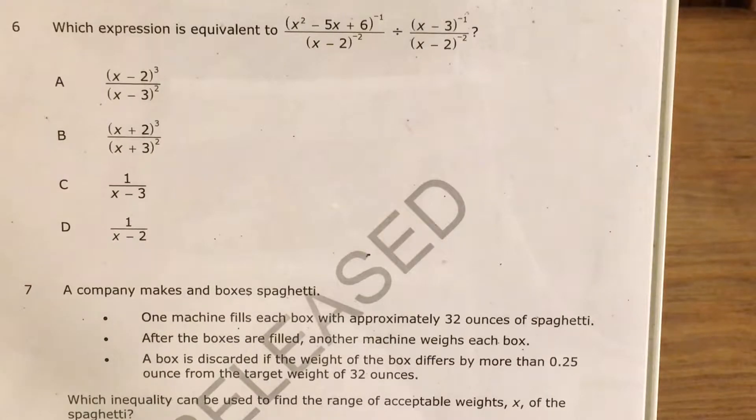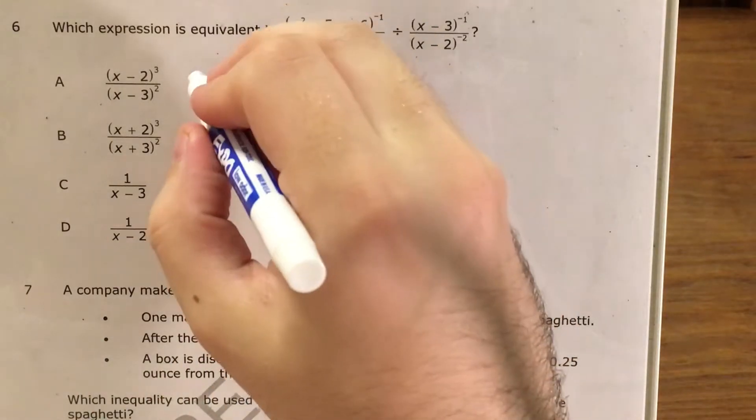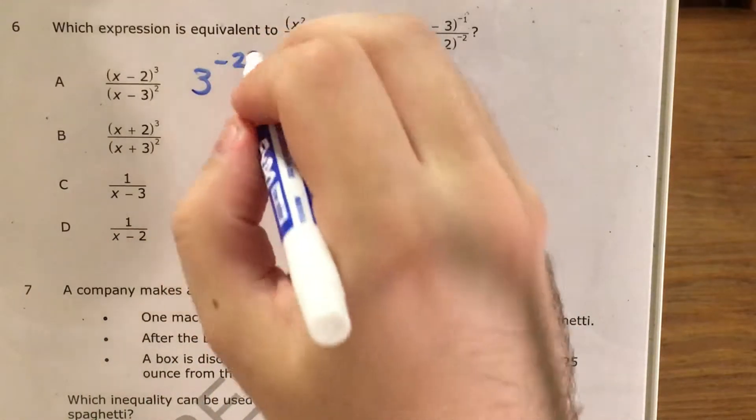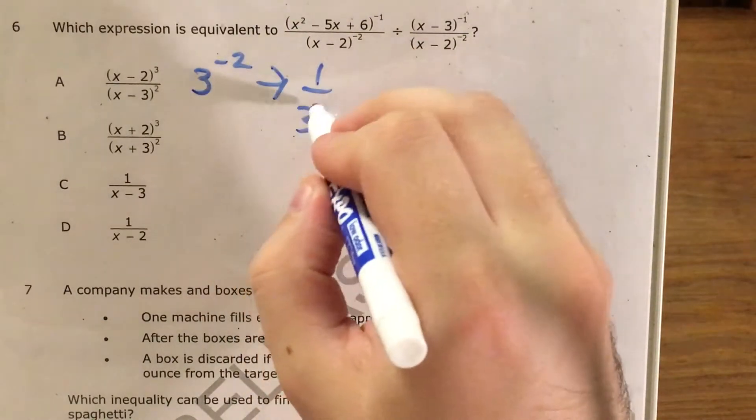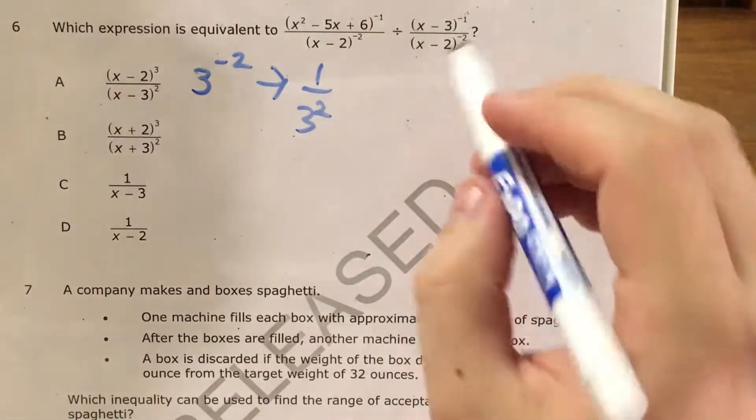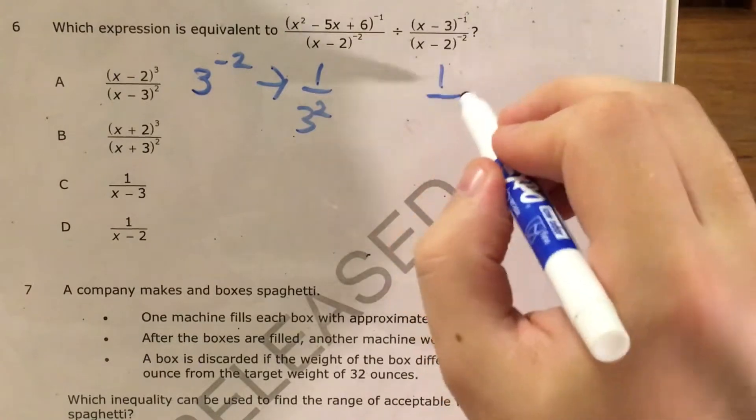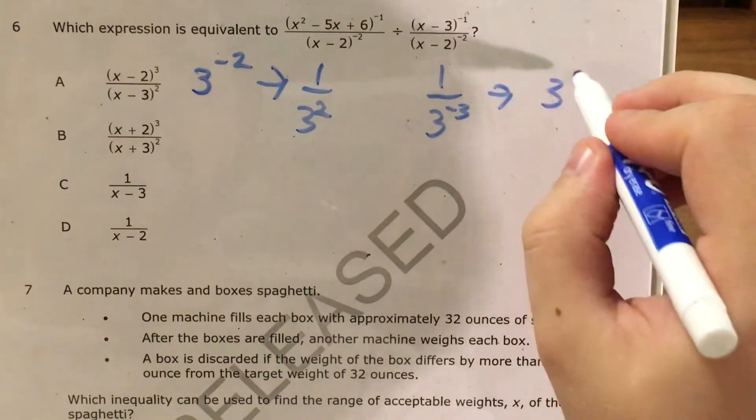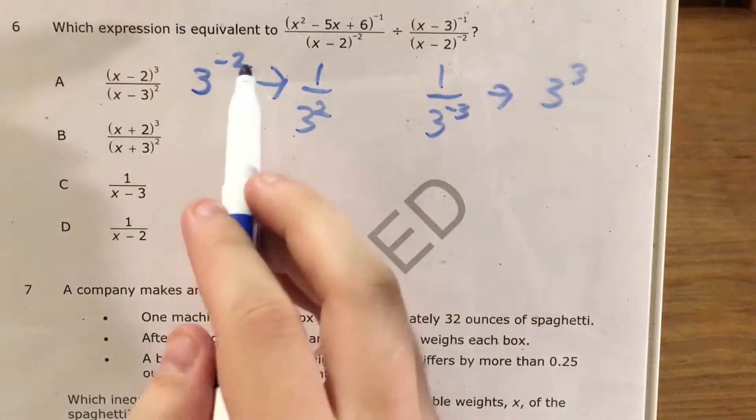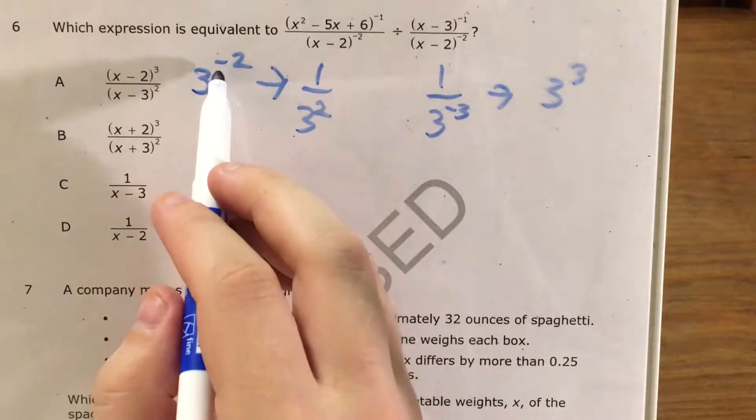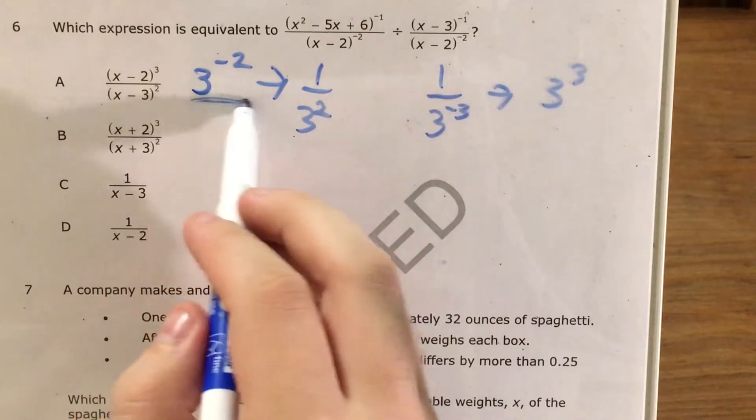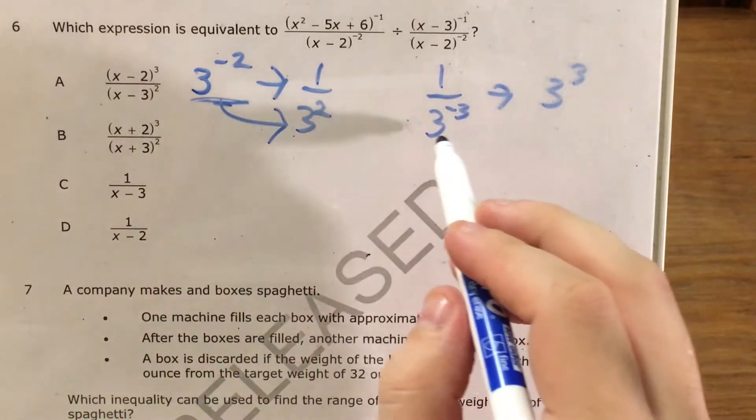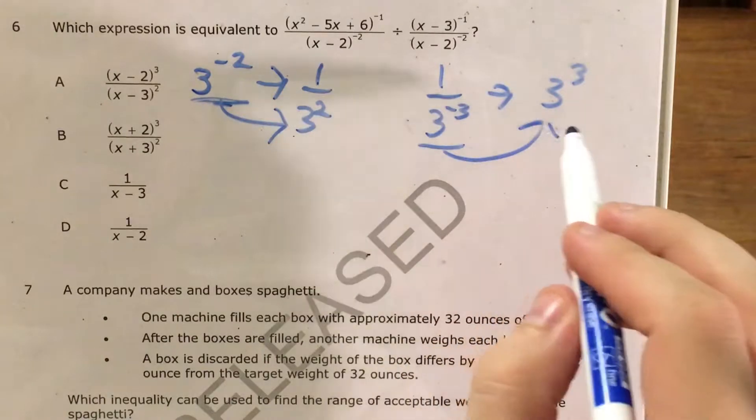But let's start by talking about these negative exponents. If you remember from maybe this year, maybe in a previous year, if I see 3 to the negative 2, that's the same thing as 1 over 3 squared. And if I see 1 over 3 to the negative 3, that's the same thing as 3 to the third power. Essentially the idea of a negative exponent is that we need to rewrite this expression with a positive exponent on the other side of a fraction.